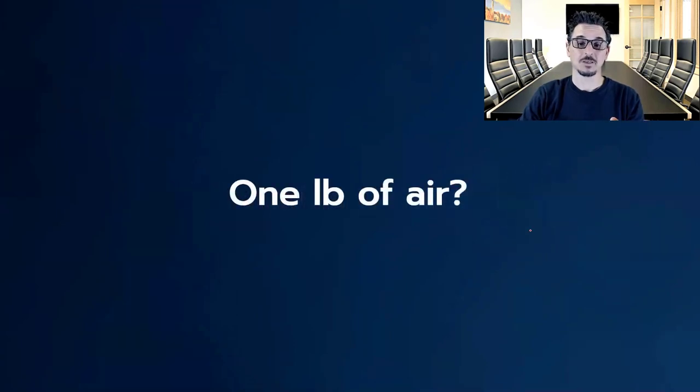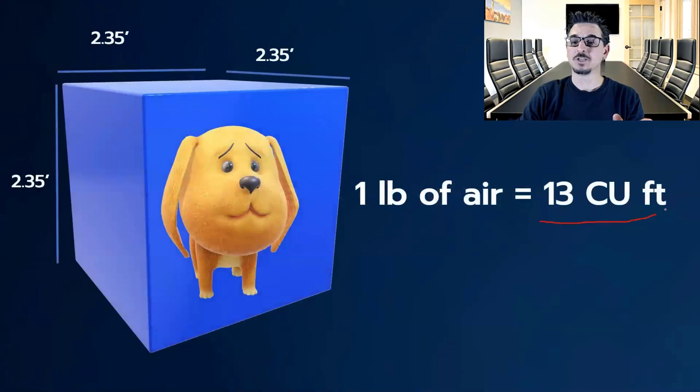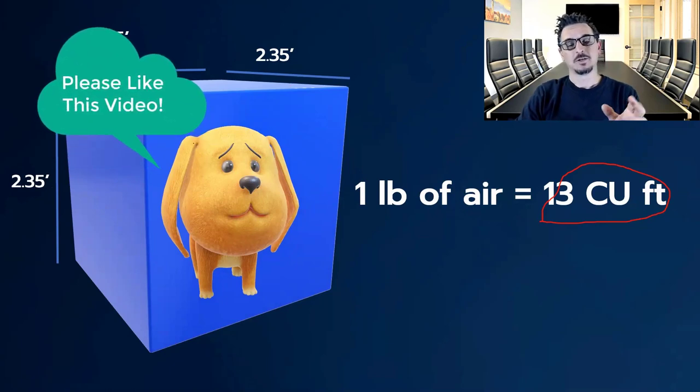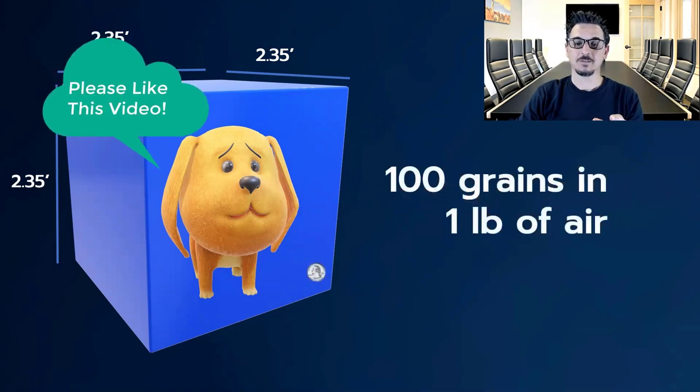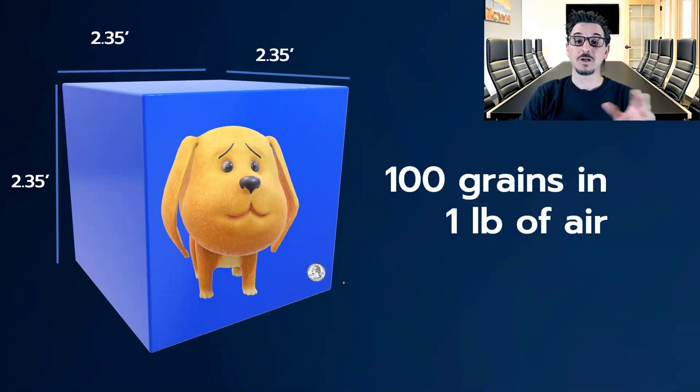What does a pound of air look like? A pound of air is 13 cubic feet, and if you were to draw it out graphically, it would be 2.35 feet cubed. The dog is only here to give you a representation of scale. So if we take that hundred grains and put it in a pound of air, it would look something like this. Just to give you a graphical representation of what's going on here.